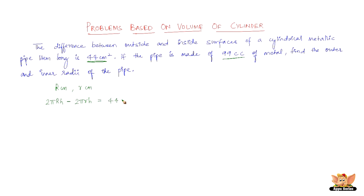The difference between the outside surface area and inside surface area is given as 44 cm². We have two unknowns: capital R and small r. We know π and h, so let us form an equation from this. The next data is that the pipe is made of 99 cm³ of metal. This is not simply the volume of a solid cylinder — this is the volume of the material, which is the external volume minus the internal volume.